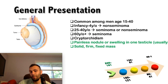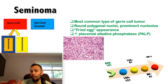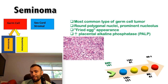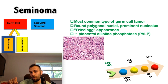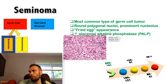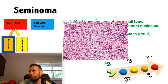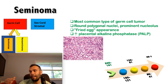Seminoma is the most common type of germ cell tumor—and thus the most common testicular tumor overall—peaking in incidence around the third decade of life. Histologically, look for round polygonal nuclei, a prominent nucleolus, and clear watery cytoplasm giving a 'fried egg' appearance: the nucleolus resembles the egg yolk and the clear cytoplasm resembles the egg white. The dysgerminoma in females is somewhat similar. Seminomas can also show elevations in placental alkaline phosphatase.